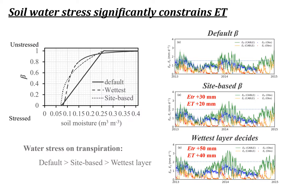Based on the above improvements, we further tested the soil water stress function. The calculated water stress decreases from the default function to the site-based function, and then the weighted soil layer function calculates the lowest water stress on transpiration. The model is very sensitive to this function selection — the site-based function simulates 13 mm more transpiration per year, and the weighted soil layer function simulates 15 mm more.